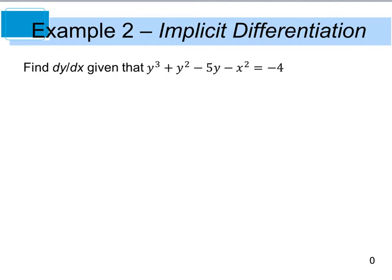For this example, we want to find dy/dx, given that we have y cubed plus y squared minus 5y minus x squared equals negative 4. So to do this, we're going to start out with our first term and differentiate it just like we would if this was an x term. So we are going to end up with 3y squared. Now, because this is not an x term, we need to include the dy/dx, so that we know that we're differentiating y with respect to x.